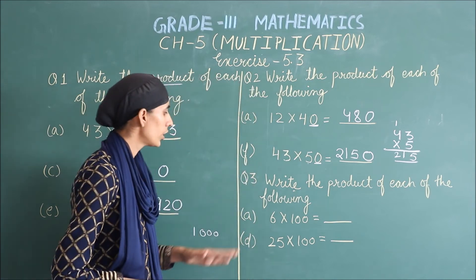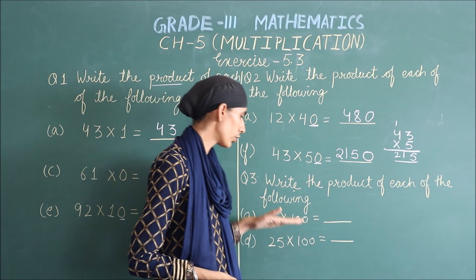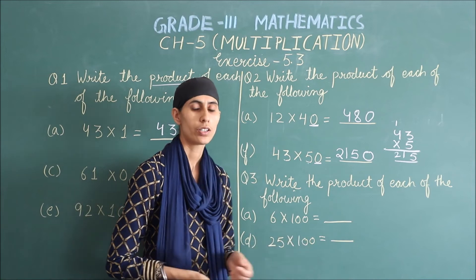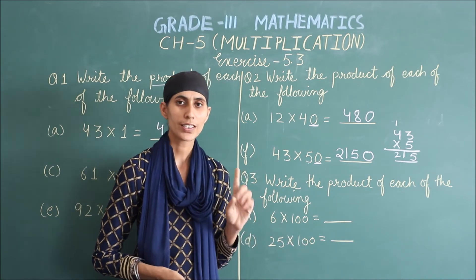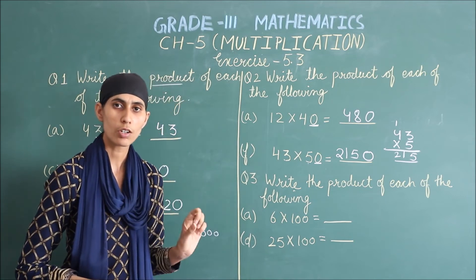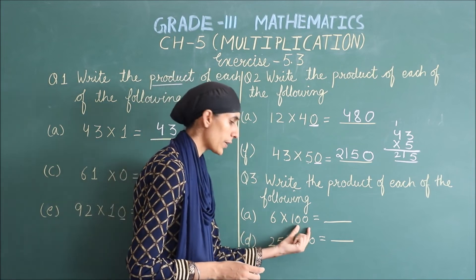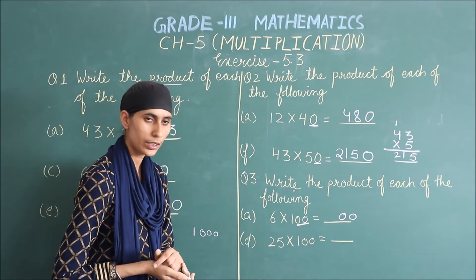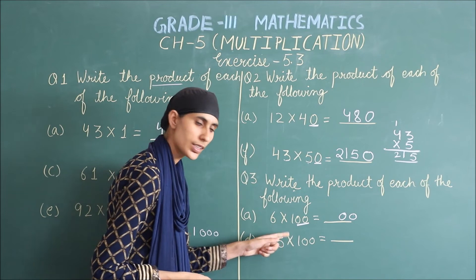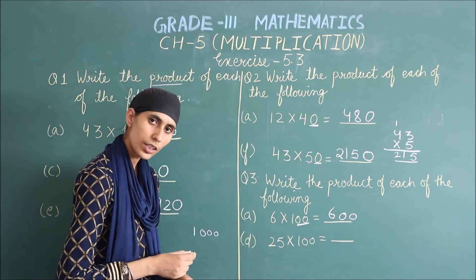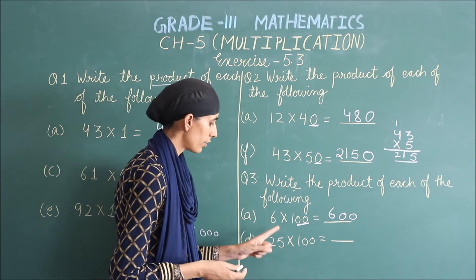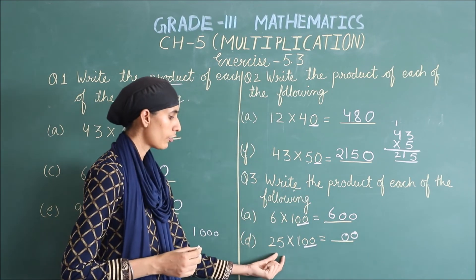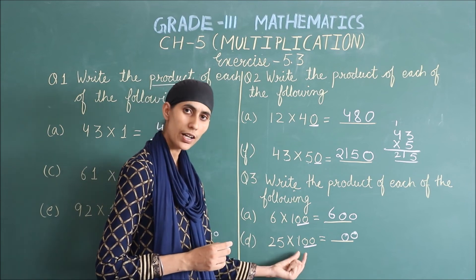Come to question 3: write the product of each of the following — فر سے ہمیں product write down کرنا ہے۔ 6 multiply by 100 — یہ وہی formula جو میں نے بتایا: 1 کے ساتھ اگر اکیلے zeros دیے ہوں تو صرف zeros count کرکے پیچھے لگا دیتے ہیں اور number کو 1 سے multiply کرتے ہیں۔ یہاں 2 zeros ہیں — دونوں directly لگا دیے، اور 6 multiply by 1 equals 6۔ Next: 25 multiply by 100 — 100 میں بھی 1 کے ساتھ 2 zeros ہیں، directly لگا دیے، اور 25 ones are 25۔